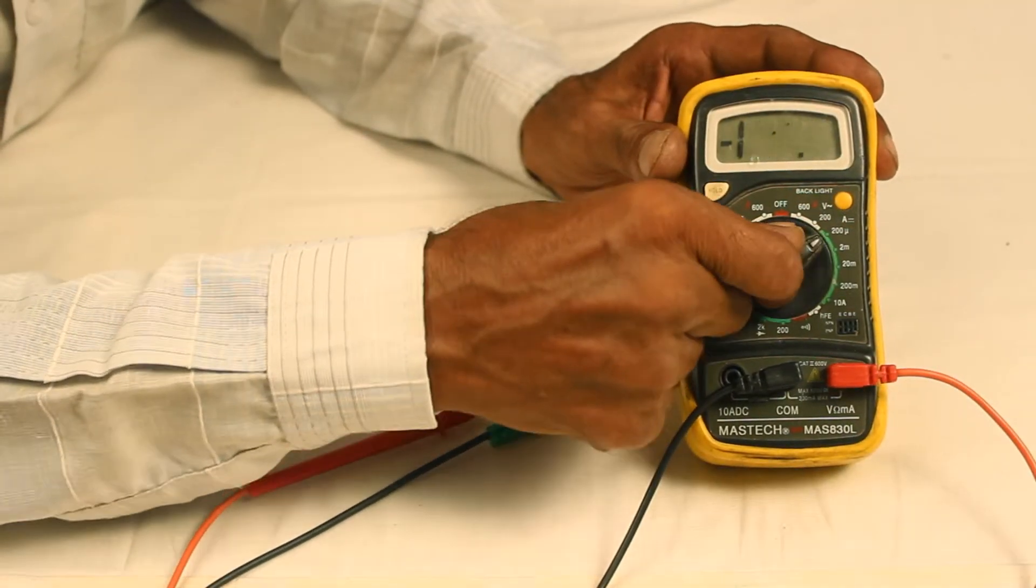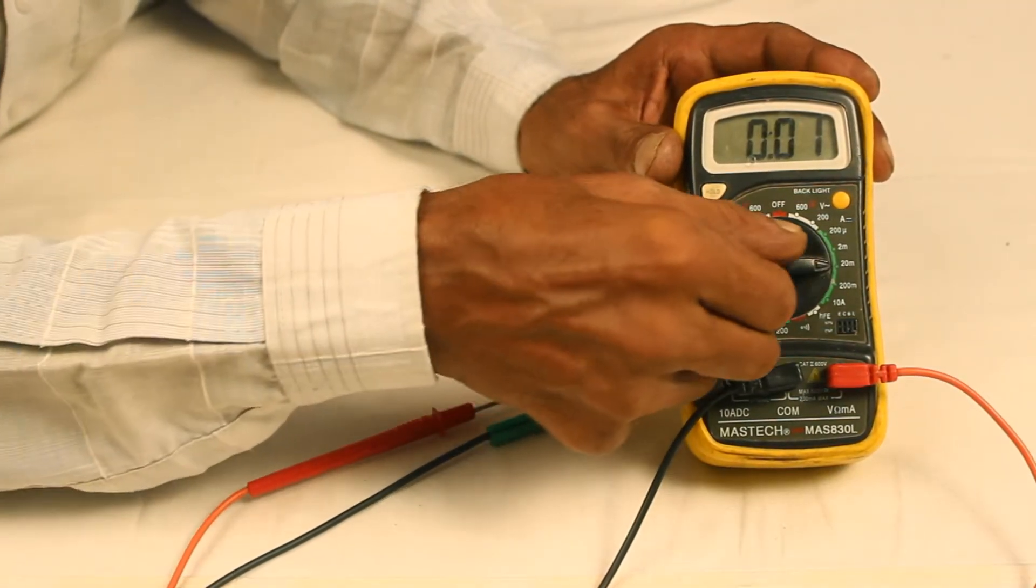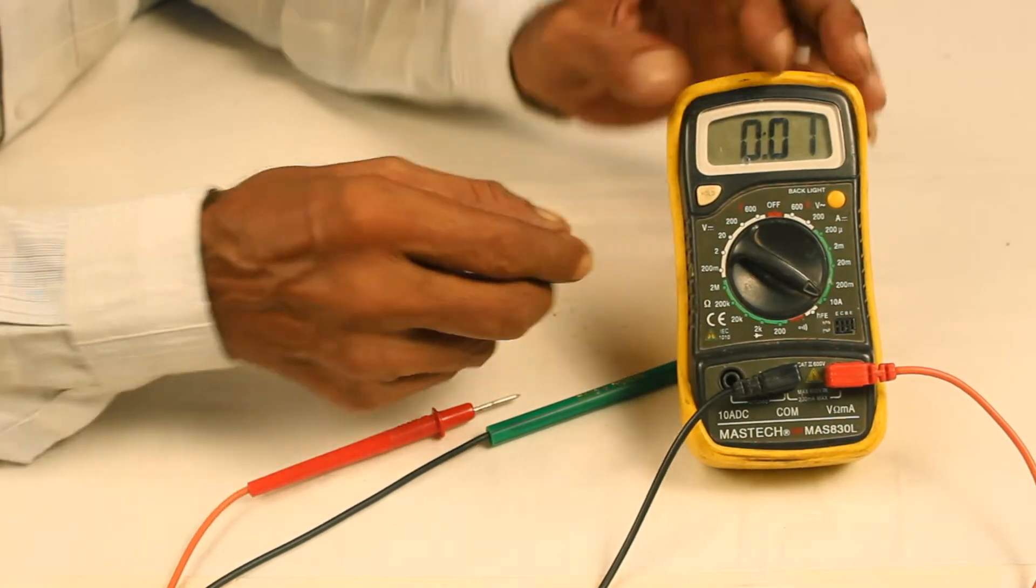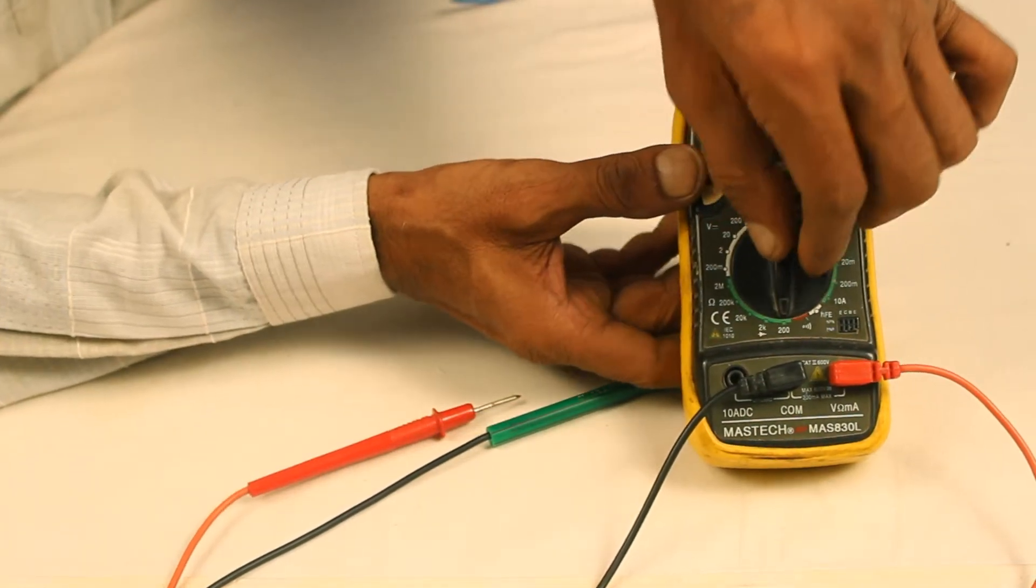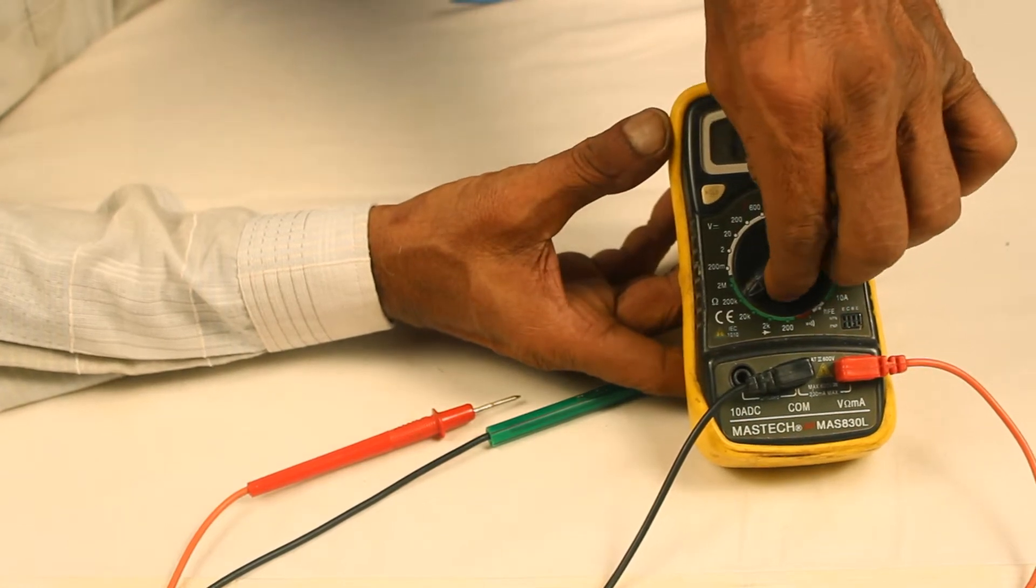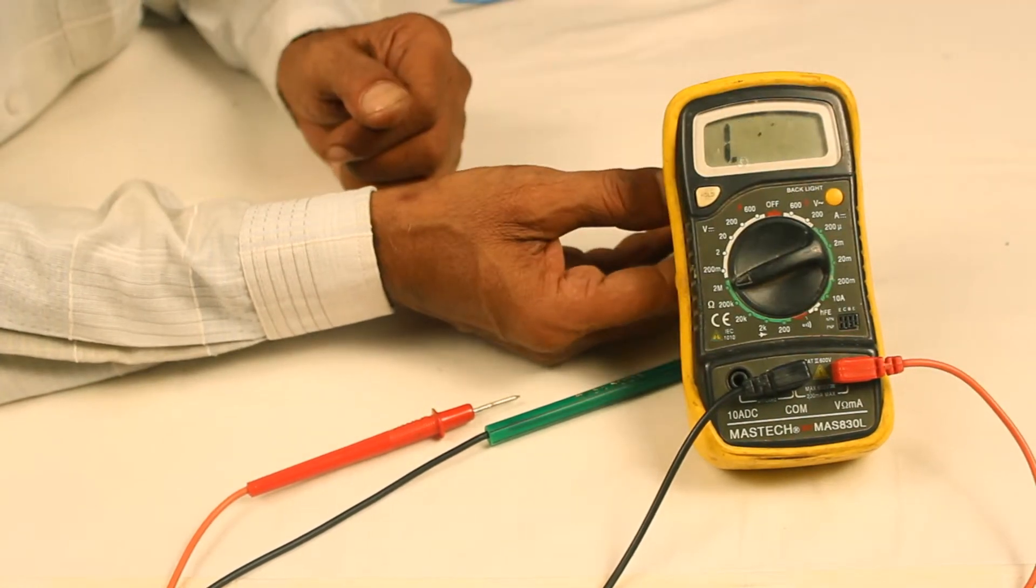On these ranges the multimeter can be used to measure current and on these ranges the multimeter will measure resistance.